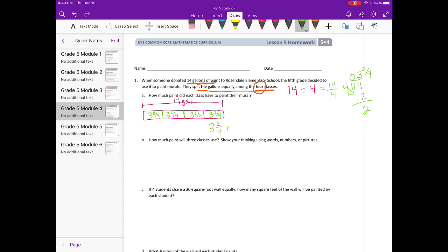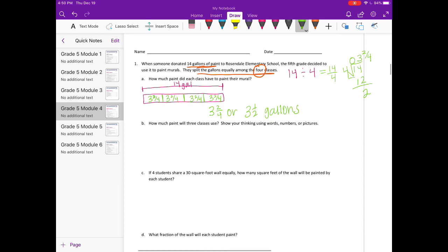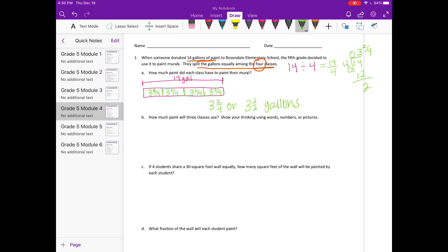So each of these is three and two fourths. So each class, each of the four classes, gets three and two fourths gallons or three and a half gallons. Part B: How much paint will three classes use? Show your thinking using words, numbers, or pictures. I'm going to use this picture. I'm just going to draw an arrow and use the picture above. So three classes would be this one, this one, and this one.